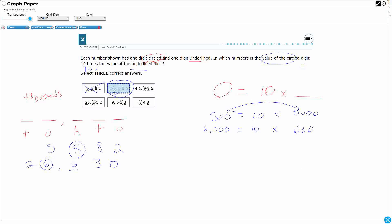And let's keep going now that we know what we're doing. So I've got 41,996. This first 9 is circled. The second 9 is underlined. So let's try that.